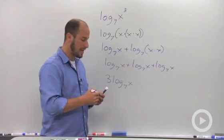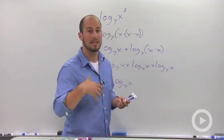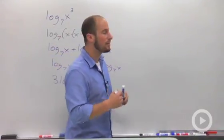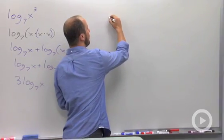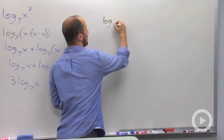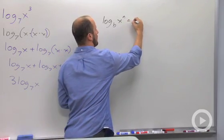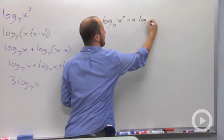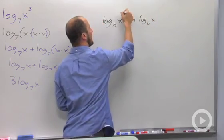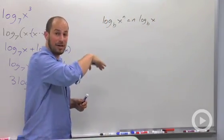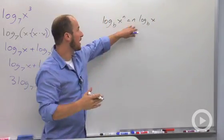This introduces a new property of logs, which is the power rule. If we ever have a power on whatever is inside the log, what we can do is bring that down in front. Log base b of x. So this n, that exponent can just come down in front and we have the same expression.